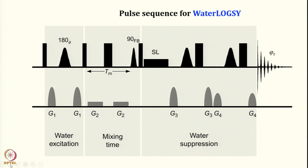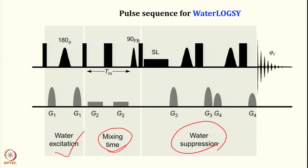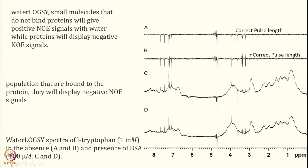The pulse sequence is essentially simple: you excite water, then during a mixing time the magnetization of the irradiation is transferred. Finally you suppress water and look at the signal coming from the ligand molecule. We look at the small molecule. The pulse length must be correct for a good line shape — an incorrect pulse length gives phase distortion. Traditionally the plot is shown as negative when there is no WaterLOGSY transfer. A small molecule that does not bind to protein does not give a positive NOE signal with water, while protein displays a negative NOE as conventionally plotted.